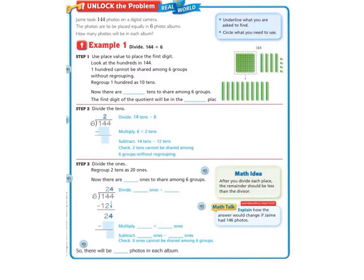Let's begin by reading the Unlock the Problem. It says, Jamie took 144 photos on a digital camera. The photos are to be placed equally in six photo albums. How many photos will be in each album?